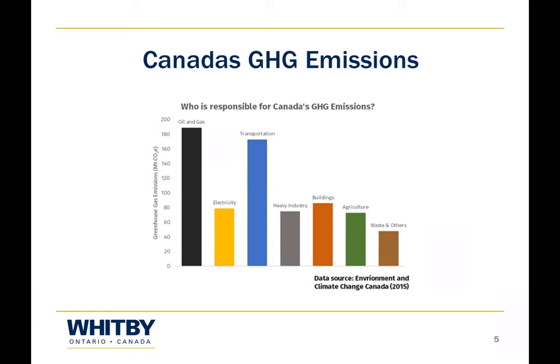Per population, Canada has the highest greenhouse gas emissions per person in the world — more than the United States. Many think it's because of cold winters, but the main reason, according to the Government of Canada, is our oil and gas sector. The extraction and manufacturing of oil and gas results in a lot of greenhouse gas emissions. Followed by that is our transportation sector: we are a big country, very car-dependent, and most of our cars are fueled by fossil fuels such as gas and diesel.